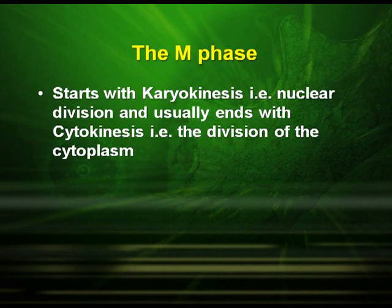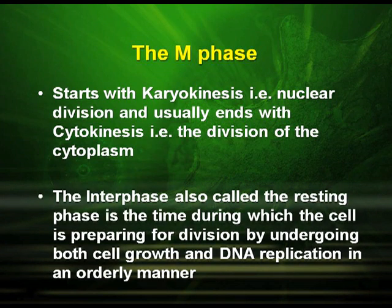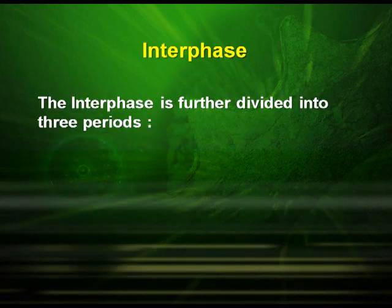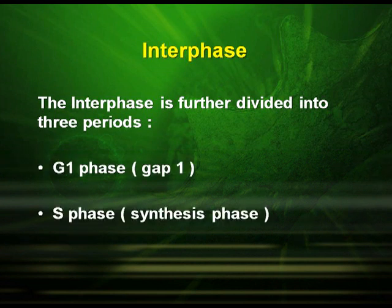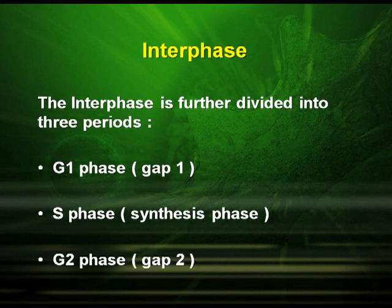The M phase starts with karyokinesis, that is nuclear division, and usually ends with cytokinesis, that is the division of the cytoplasm. The interphase, also called the resting phase, is the time during which the cell is preparing for division by undergoing both cell growth and DNA replication in an orderly manner. The interphase is further divided into three periods: G1 phase or GAP1, S phase or synthesis phase, and G2 phase or GAP2.